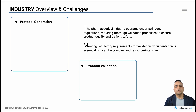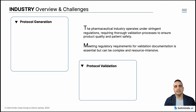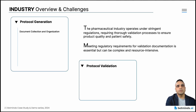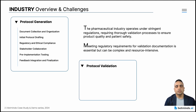Protocol generation involves the creation of a detailed plan for a clinical trial or research study. This document outlines the objectives, design, methodology, statistical considerations, and organization of the trial. The main steps include document collection and organization, initial protocol drafting, regulatory and ethical compliance, stakeholder collaboration, feedback integration, and finalization.